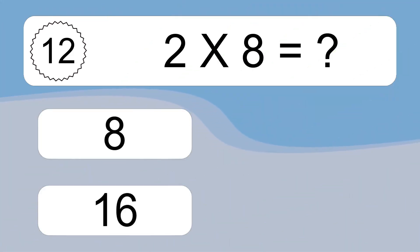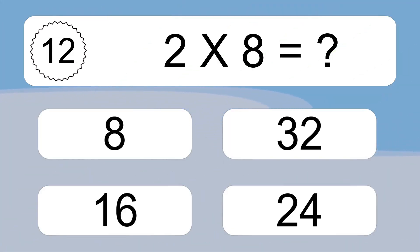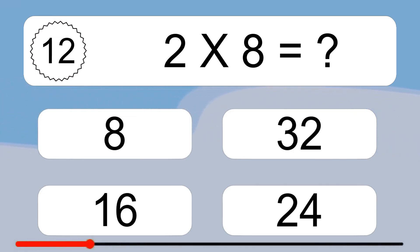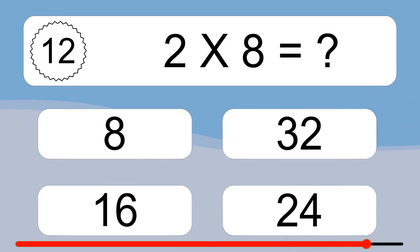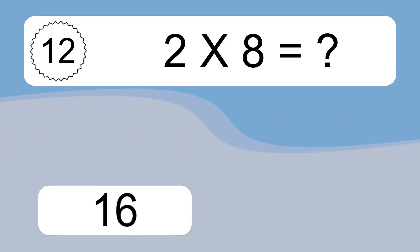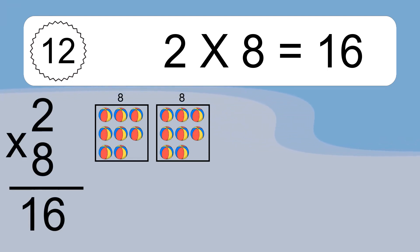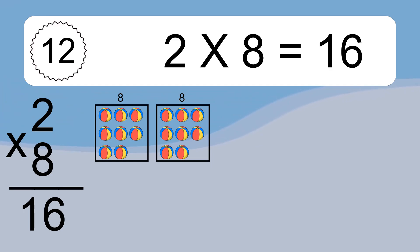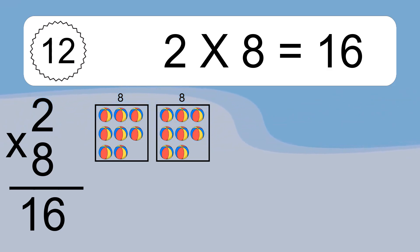Two times eight equals what? Two times eight equals 16. We have two boxes and each box has eight colorful balls inside. If you count all the balls in all the boxes together, you will have two times eight balls. This equals 16 balls.